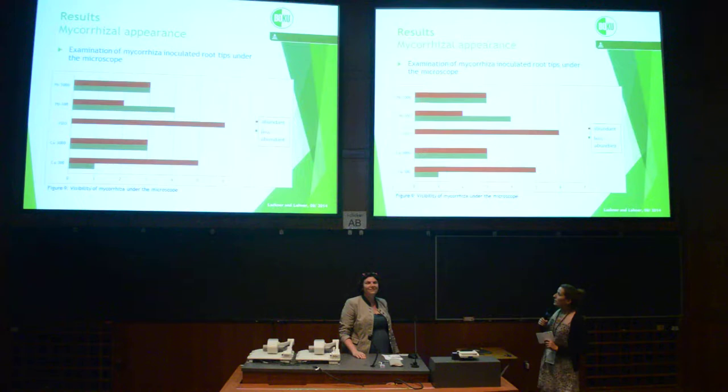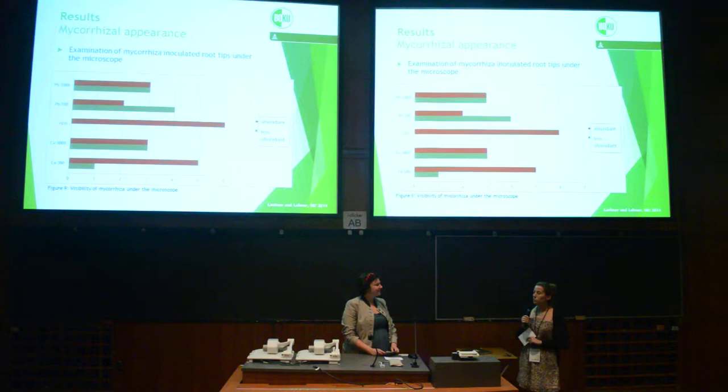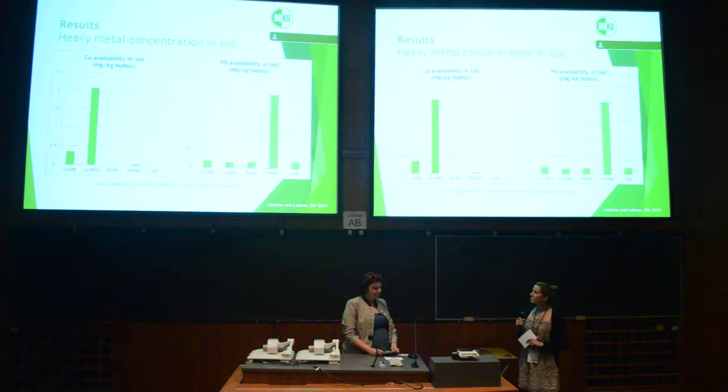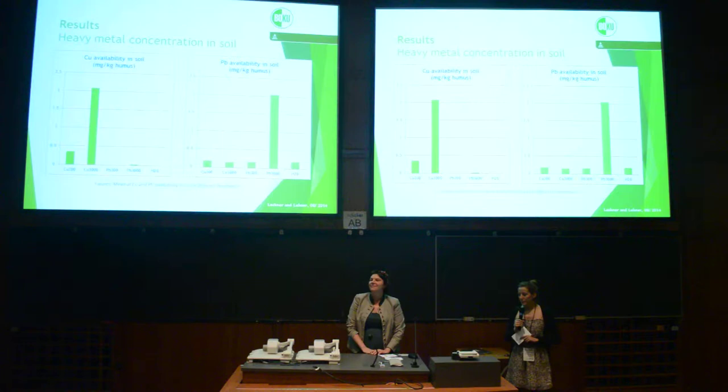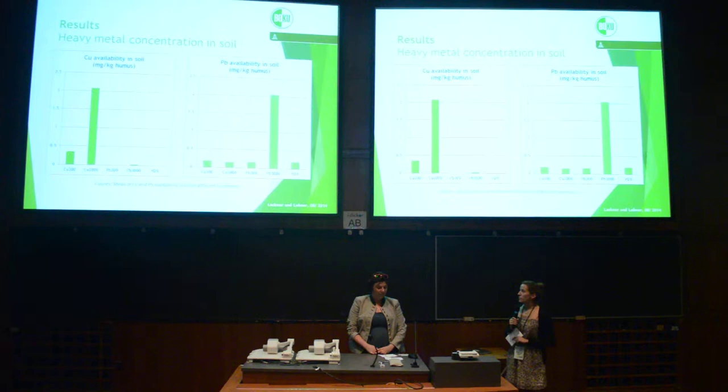Here you can see the mycorrhizal appearance of our experiment — we found mycorrhizal in every sample. But the most mycorrhizal was found in the just water-treated, polluted ones. Here you can see the heavy metal concentration in soil: the copper and lead 3,000 concentration was 10 times bigger than the copper and lead 300 ones — a significant difference.